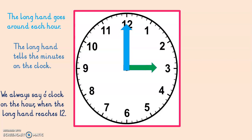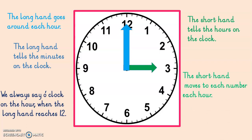The little hand — the green one — is the short hand and it tells the hours on the clock. The short hand moves to each number each hour. So the green hand, the short hand, is on the number of hours it is. The 12 tells us it's o'clock and the green short hand tells us the hour. So if the green one says 3 and the long hand is on 12, the time is 3 o'clock.